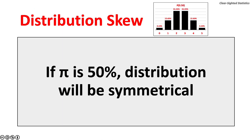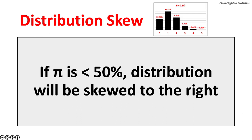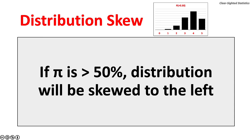Distribution skew: if the probability of success pi is 50%, the distribution will be symmetrical. If pi is less than 50%, the distribution will be skewed to the right. If pi is greater than 50%, the distribution will be skewed to the left.